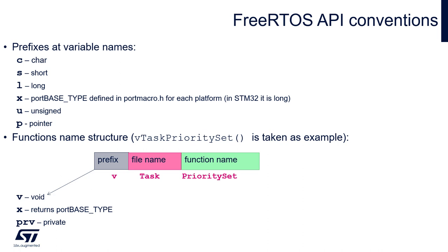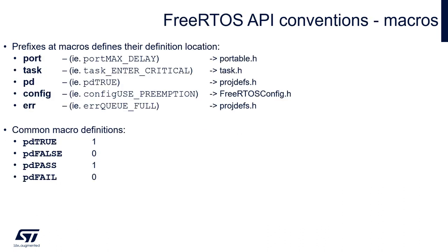In this example, it will be 'priority set', so the complete function name would be vTaskPrioritySet. This means the function returns void — no return value. The name is 'priority set' and it is located within task.c. Apart from functions, the FreeRTOS API also has a couple of macros which help perform basic operations during the work of the operating system.